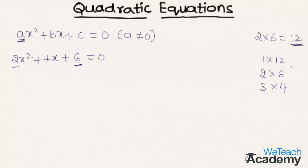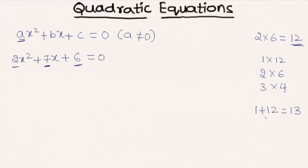We need to find a factor pair whose sum equals the coefficient of x. Adding the first pair: 1 + 12 = 13. Adding the second pair: 2 + 6 = 8. Adding the last pair: 3 + 4 = 7. The last pair satisfies the condition.